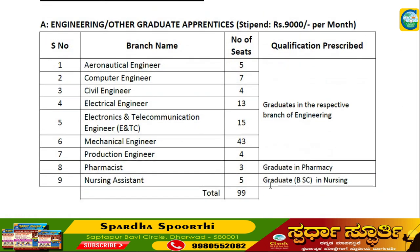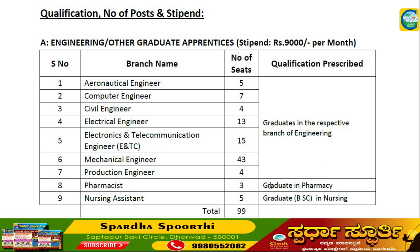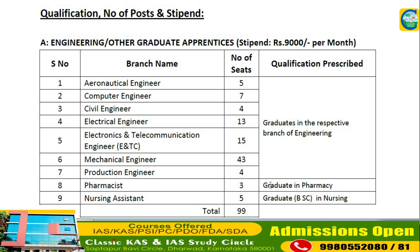Here are the qualification details. The available branches for Graduate Apprentice are: Computer Engineering, Civil Engineering, Electrical Engineering, Electronics and Telecommunication Engineering with 15 vacancies, Mechanical Engineering, Production Engineering, Pharmacist, and Nursing Assistant with 5 vacancies. In total, there are 99 vacancies. This is for engineering or other graduate apprentices.